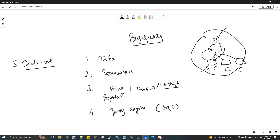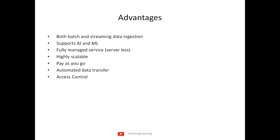Let's look at the advantages. BigQuery supports both batch and streaming data ingestion. You can ingest a file or table as batch data, and capture real-time events like website transactions as streaming data. The minimum capacity is 100,000 rows per second for streaming and more than 1 TB per second for batch data. BigQuery also supports AI and ML libraries — artificial intelligence and machine learning — and you can even process data via BigQuery using these libraries.